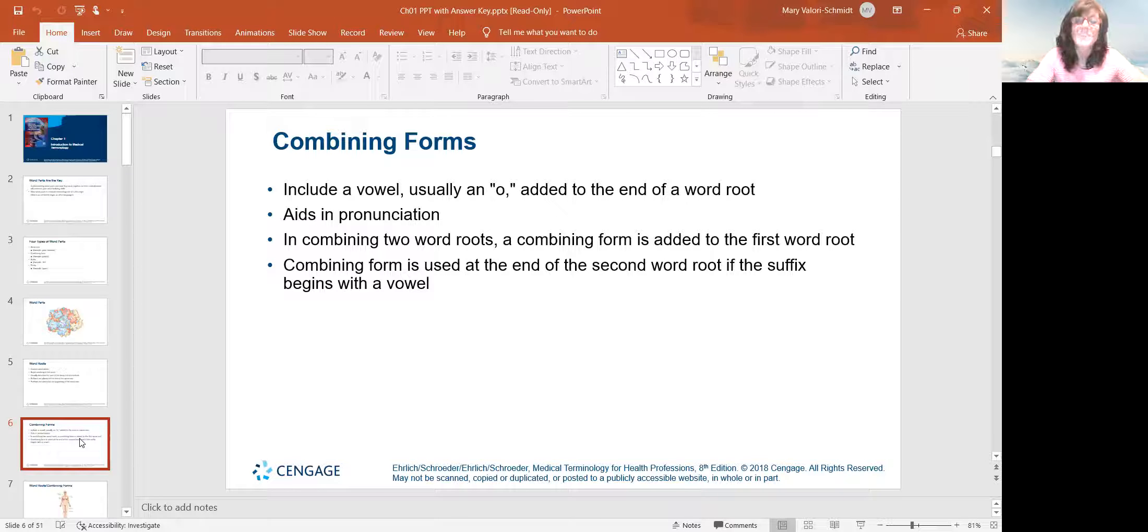Combining forms always include a vowel. Usually an O is added to the end of the word root, and it helps with pronunciation. For example, G-A-S-T-R, gastro, you can't really say it. But if we put a combining form, we add that O, gastro, you can say gastro, right?